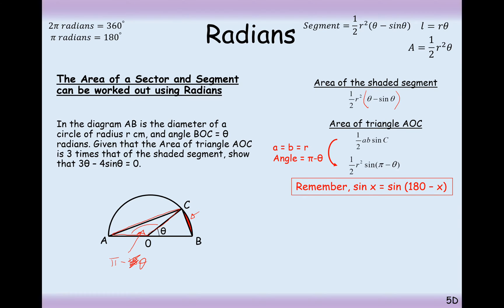Remember that on the sine graph it's symmetric around the 90-degree point. So when you have sine of (pi minus an angle), that's going to be the same as sine of that angle. We can use this rule to simplify half R squared sine(pi minus theta) into half R squared sine theta.